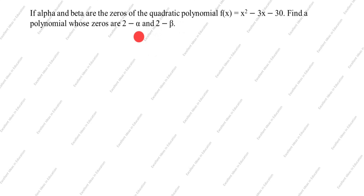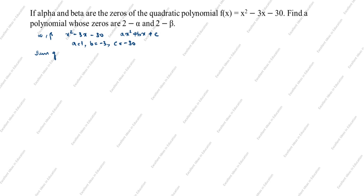Now we will see how to solve this problem. The polynomial is given as x² - 3x - 30. The quadratic polynomial formula is ax² + bx + c. Here a = 1, b = -3, c = -30. Sum of zeros: alpha + beta = -b/a = -(-3)/1.